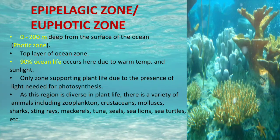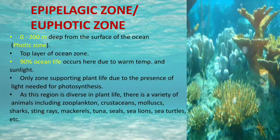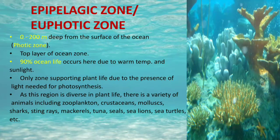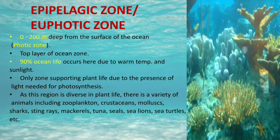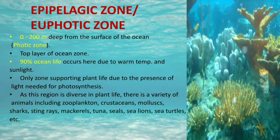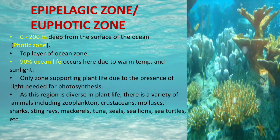The epipelagic zone is the only zone supporting plant life due to the presence of light needed for photosynthesis. As this region is diverse in plant life, there is a variety of animals including zooplanktons, crustaceans, mollusks, sharks, stingrays, mackerel, tuna, seals, sea lions, sea turtles, etc.